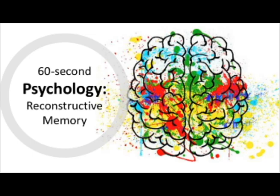Finally, if a piece of information is missing from our schema but the memory still makes sense without it, we often just leave it out. This makes the overall memory shorter while still making sense, therefore this is called shortening.